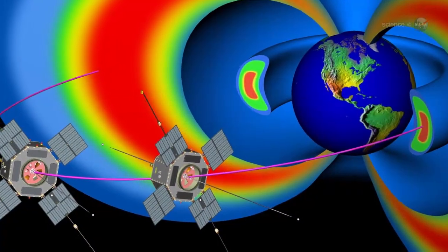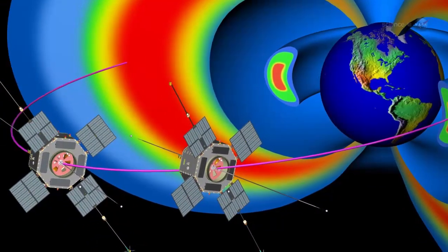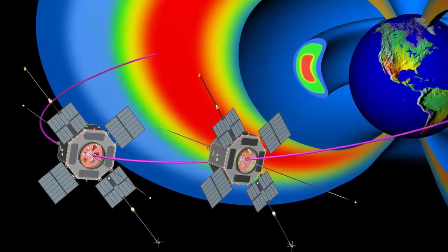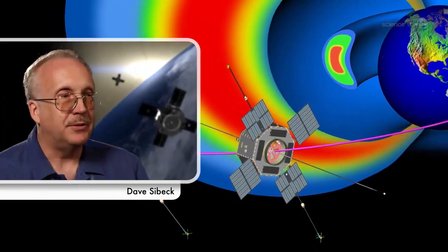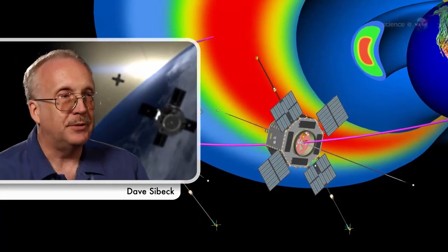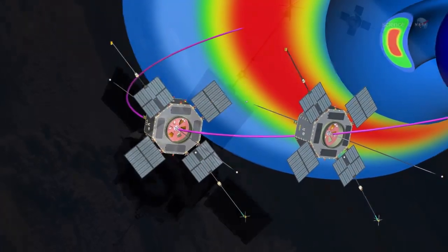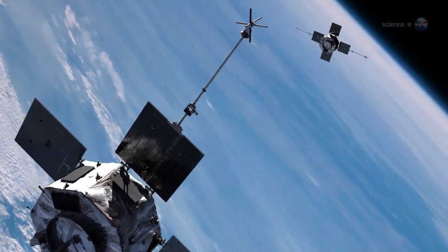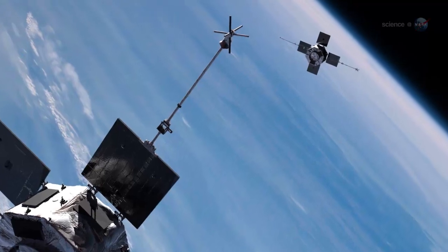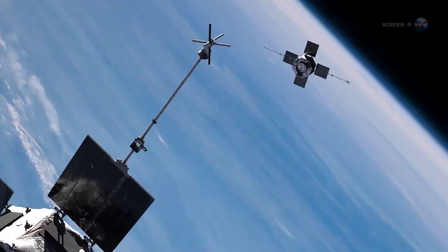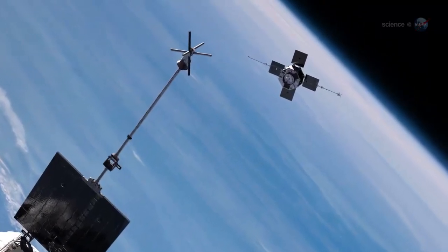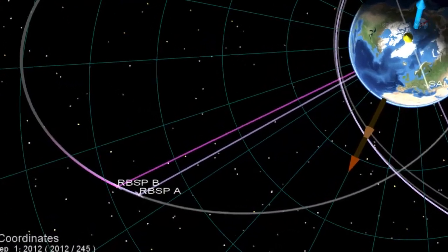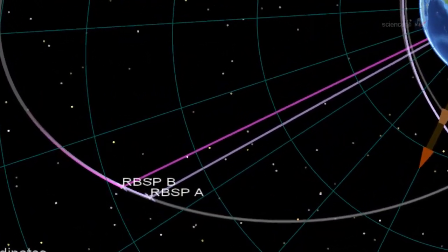The production of killer electrons is a matter of much debate, and chorus waves are only one possibility, notes storm probes mission scientist Dave Seibach. Launched in August 2012, the two probes are orbiting inside the radiation belts, sampling electromagnetic fields, counting the number of energetic particles, and listening to plasma waves of many frequencies. We hope to gather enough data to solve the mystery once and for all, says Seibach.